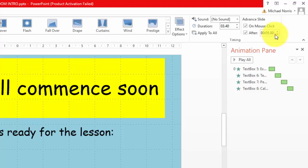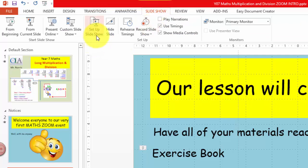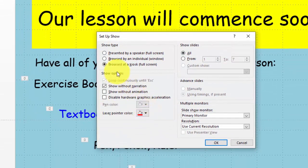So we're almost ready. The last thing to do then is to set this into what's called kiosk mode. So we'll go back to our slideshow and we'll go to setup slideshow, and down here in this menu option show type we're going to make sure we've highlighted the button browsed at a kiosk full screen and then click OK.